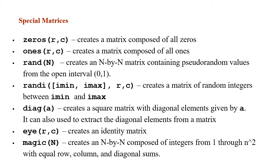The function diag can also be used to extract the diagonal of a square matrix. You can provide it a matrix as an input and the output will be an array containing the elements in the diagonal. The function eye creates the identity matrix. You simply provide it with one integer input n, and it will create a square matrix of size n by n where all elements are zeros except the diagonal elements, which have a value of one.